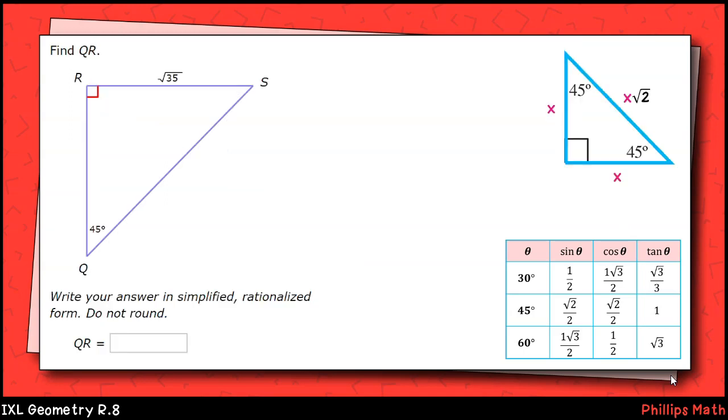The next one is a 45-45-90, or isosceles, right triangle. We're given one of the legs and asked to find QR, which is the other leg. Since this is an isosceles right triangle with two congruent acute angles, 45 degrees and 45 degrees, the legs themselves are congruent. So the square root of 35 is our final answer here.